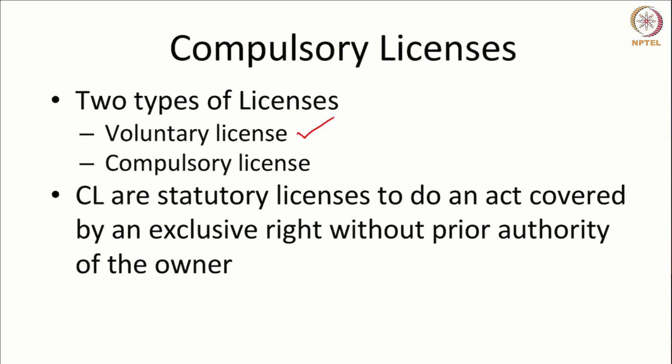Compulsory licenses are employed where it is not possible to get a voluntary license, and most of the relevant factors pertain to the interest of the public, where the government can intervene or the patent office can grant a compulsory license. Compulsory licenses are statutory licenses to do an act covered by an exclusive right without the consent of the owner — also called use without authorization. You could get a license even when the right holder is not inclined to license it to you.